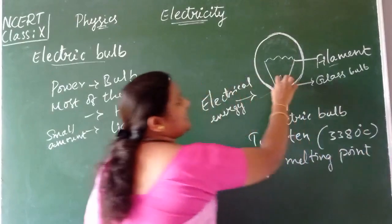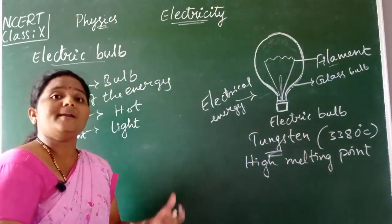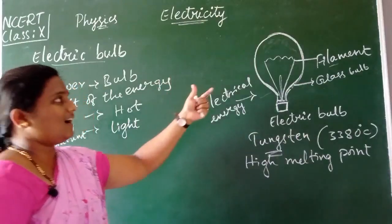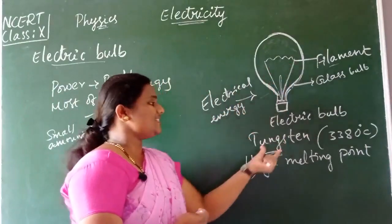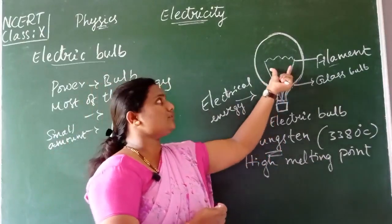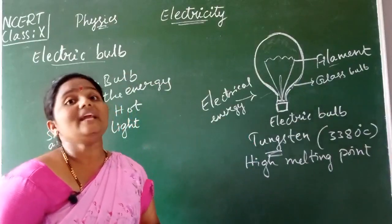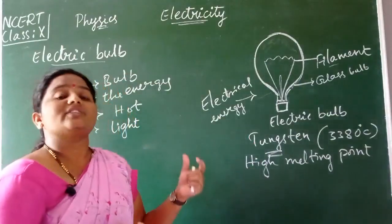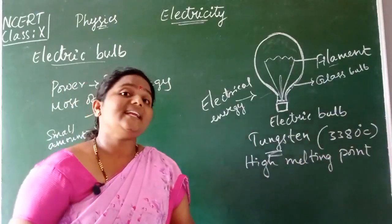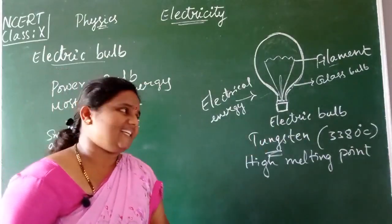Because the filament is consuming most of the energy, it should not melt easily. So it has to have a high resistance to temperature. That is why a strong metal like tungsten is widely used — because it has a high melting point of around 3380 degrees Celsius, meaning at normal temperature it won't melt easily.